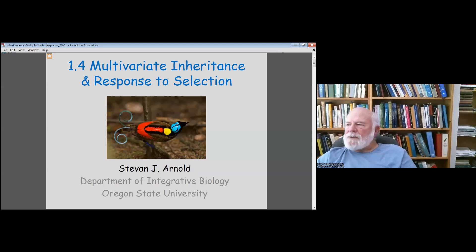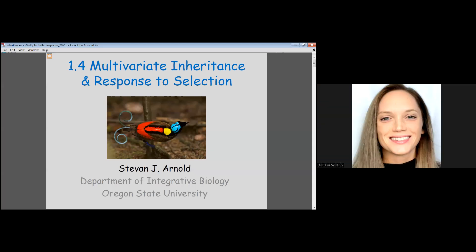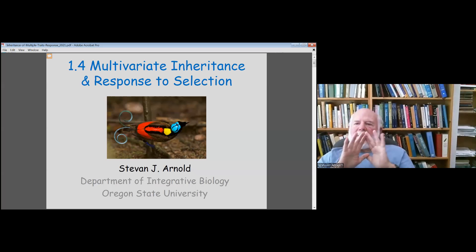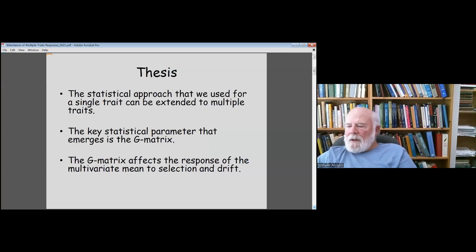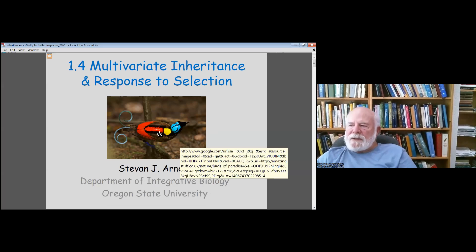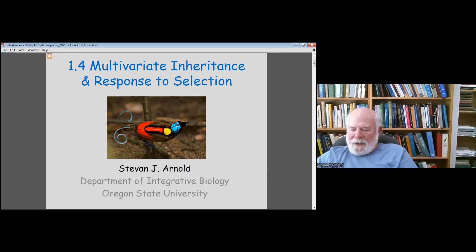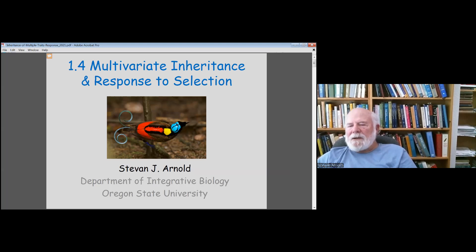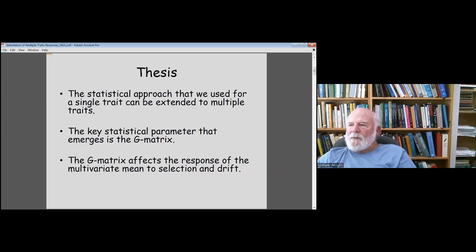Now we're going to go back over the same territory but with multiple traits. Why multiple traits? Here's Wilson's bird of paradise from New Guinea — just to describe the color of this bird you would need quite a range of colors. We know that organisms have multiple traits, and we want to have a model for inheritance and response to selection that captures that multivariate nature of many life forms.